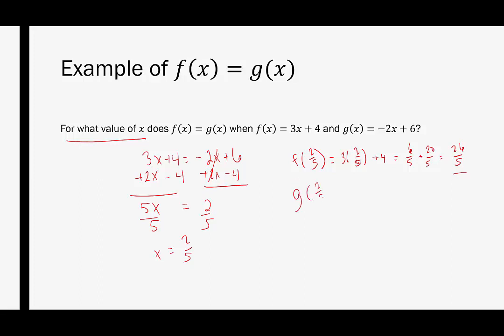g of 2 fifths will be negative 2 times 2 fifths plus 6. This would be negative 4 over 5, and then again, I'm just going to think about 6 is equivalent to 30 over 5, just so I have that common denominator. Negative 4 plus 30 is 26 over 5, so that's what should have happened, right, because they were supposed to equal each other, and they do. But again, the final answer here is that x is equal to 2 fifths, so that's the actual answer, right, because it's asking for the x value.